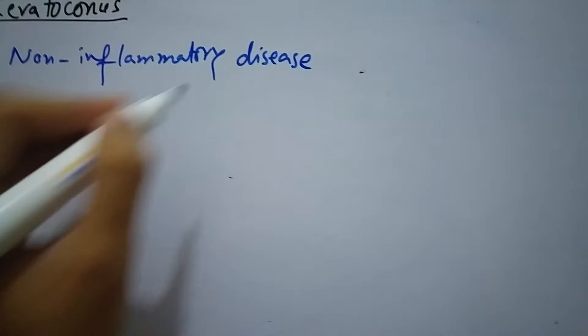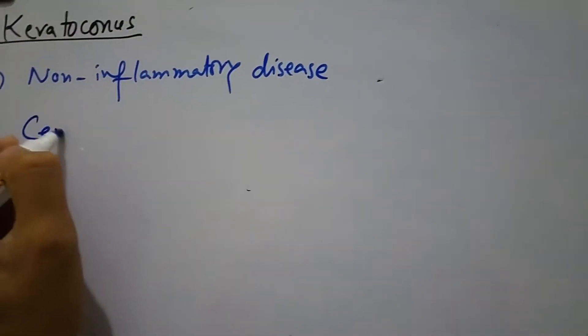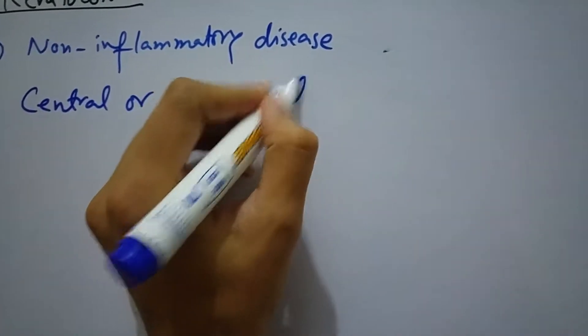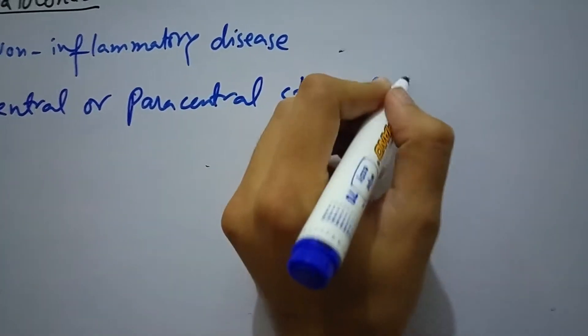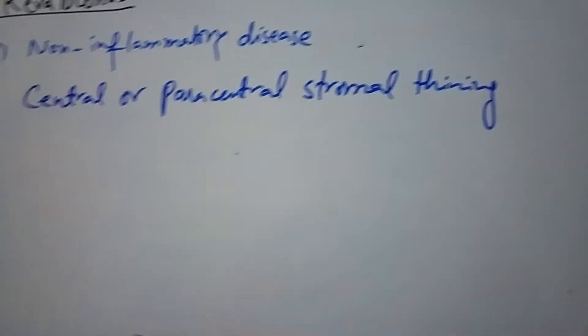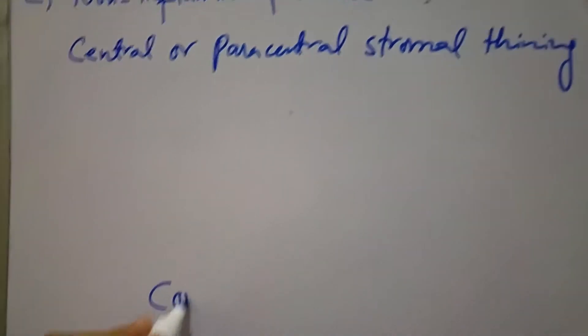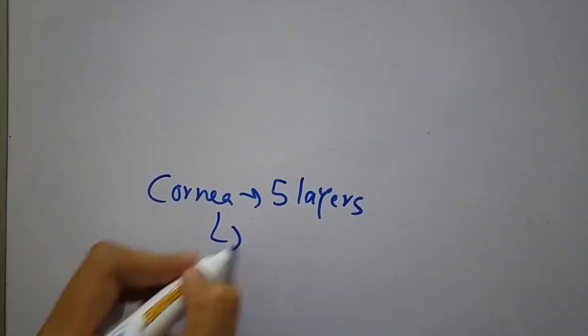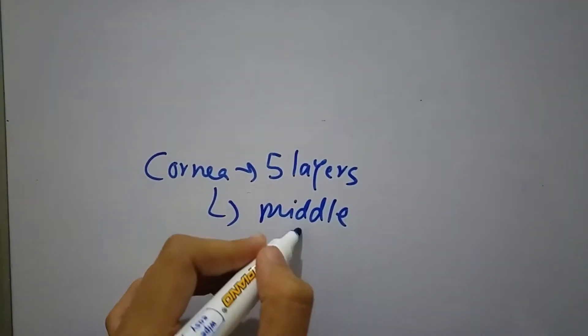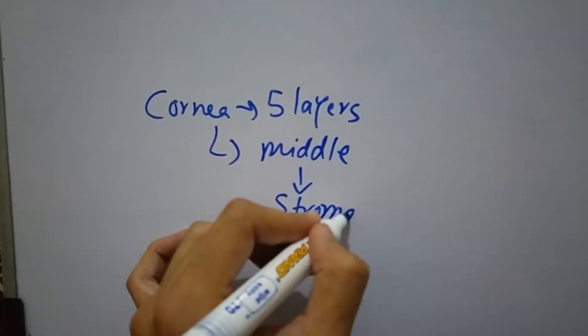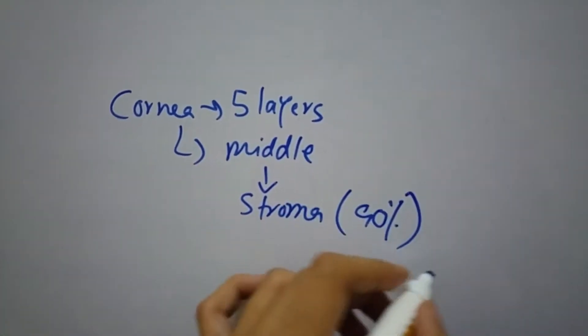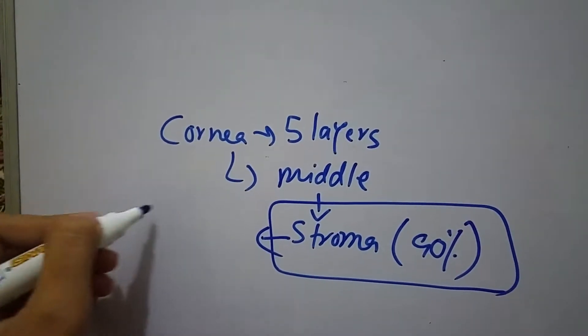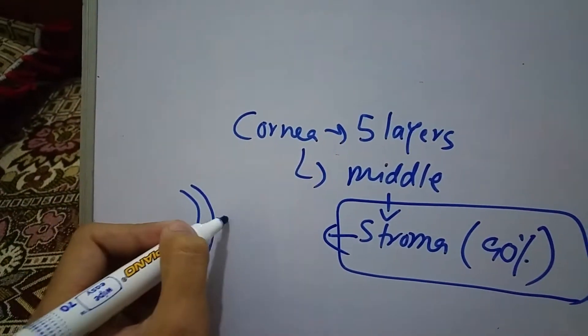In which there is progressive central or paracentral stromal thinning. Now the cornea has five layers, and the middle layer is stroma which accounts for 90% of the corneal thickness. So in keratoconus, this layer becomes thin, that is the thickness of the cornea has decreased.